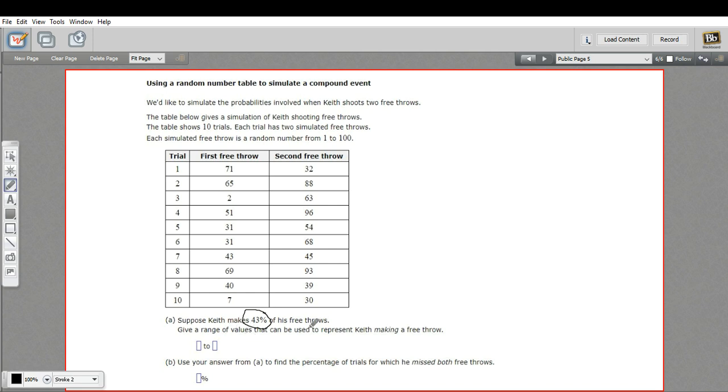So the first question is give a range of values that can be used to represent Keith making a free throw. Well, 43% means we could go from 1 to 43. So all the numbers from 1 to 43 on this chart would represent a made free throw.